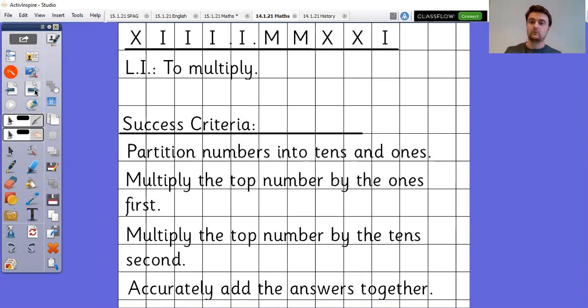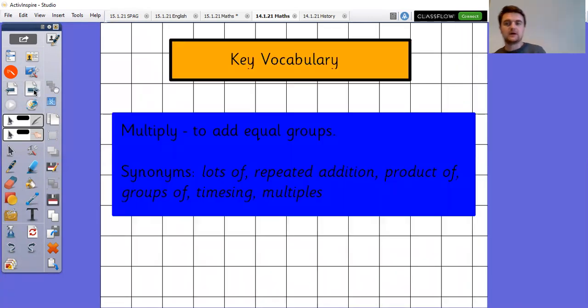So we're carrying on with using the column method today. We've been using it for multiplying two digits by two digits, three digits by two digits. And today, hopefully you would have guessed that we're going to have a go at doing four digits by two digits. It's exactly the same principle. We just have to add that extra step to make sure that we're multiplying the thousands as well. Multiplying means to add equal groups and synonyms of multiply can be lots of repeated addition, the product of groups of timesing or multiples.